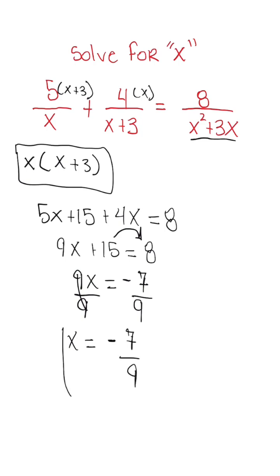So x is equal to negative 7 over 9. When you have rational equations, find the common denominator and then get rid of it, or you could use properties of proportions to also solve.